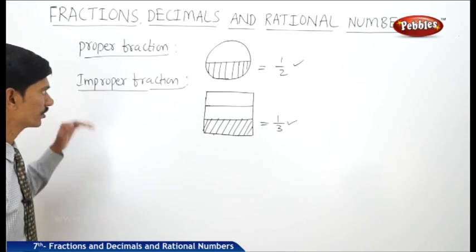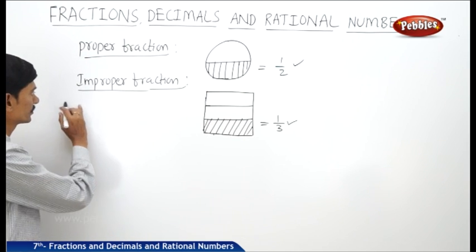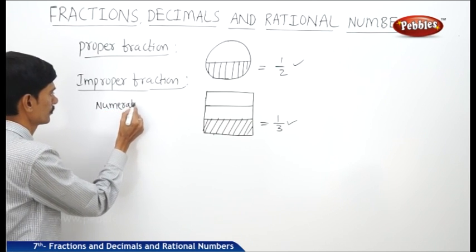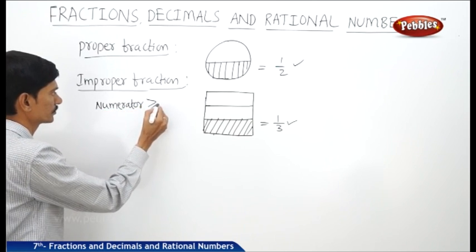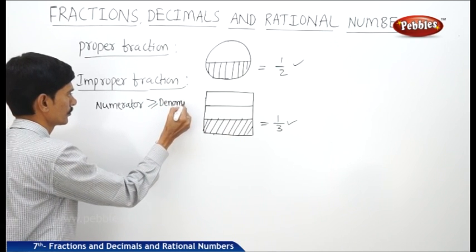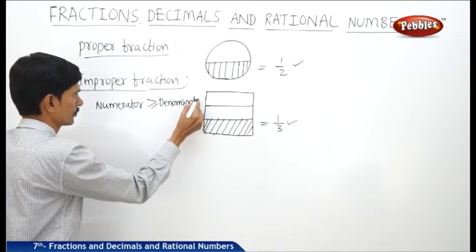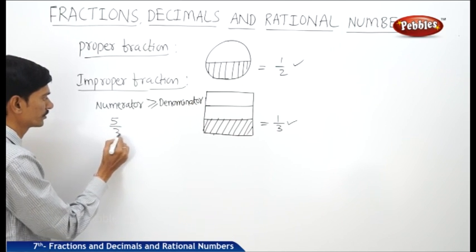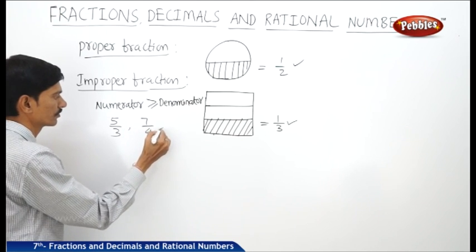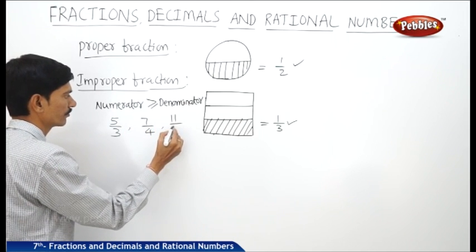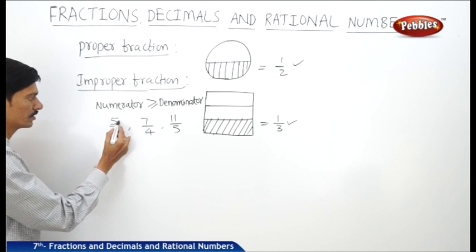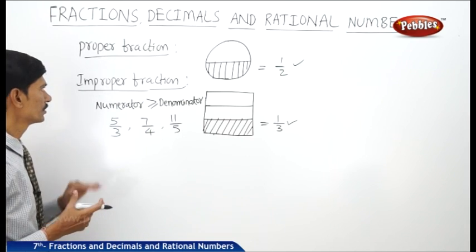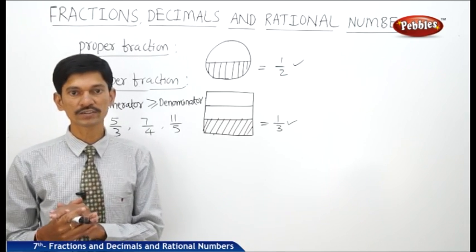An improper fraction is one where the numerator is greater than or equal to the denominator. For example, five by three, seven by four, or eleven by five — in all these fractions the numerator is greater than or equal to the denominator, so these fractions are said to be improper fractions.